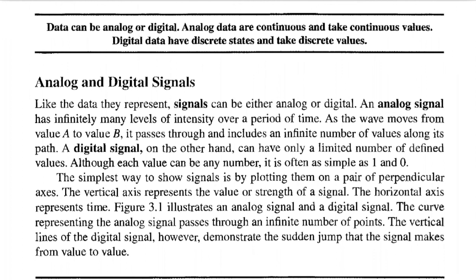Analog and Digital Signals. Like the data they represent, signals can be either analog or digital. An analog signal has infinitely many levels of intensity over a period of time. As the wave moves from value A to value B, it passes through an infinite number of values along its path. A digital signal, on the other hand, can have only a limited number of defined values. Although each value can be any number, it is often as simple as 1 and 0.